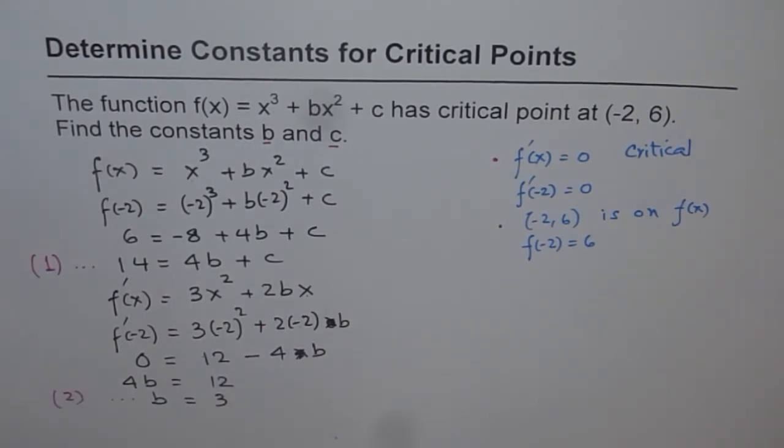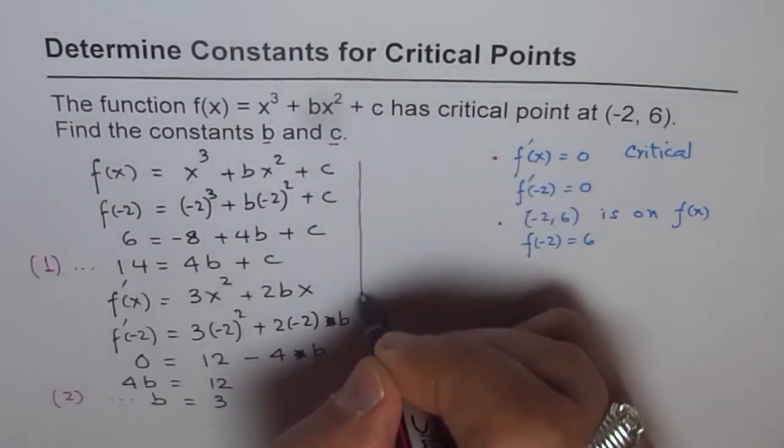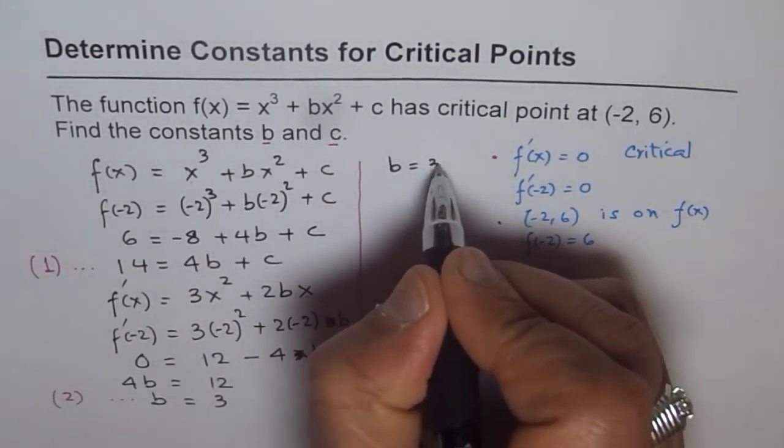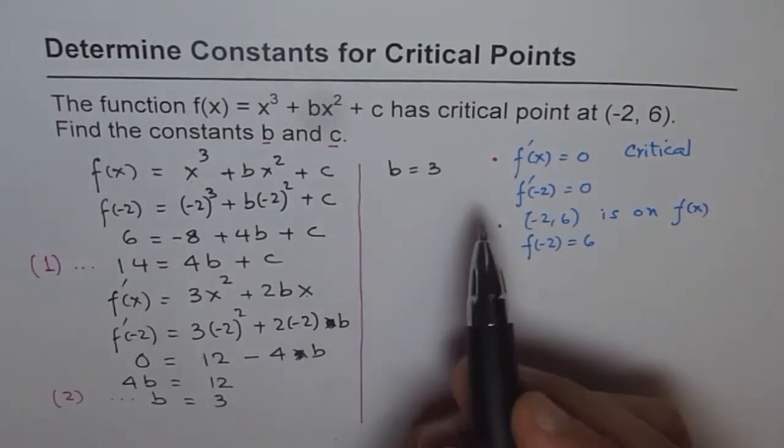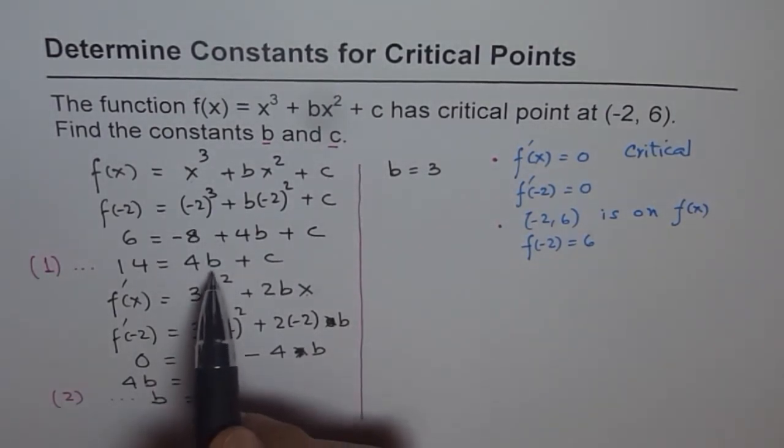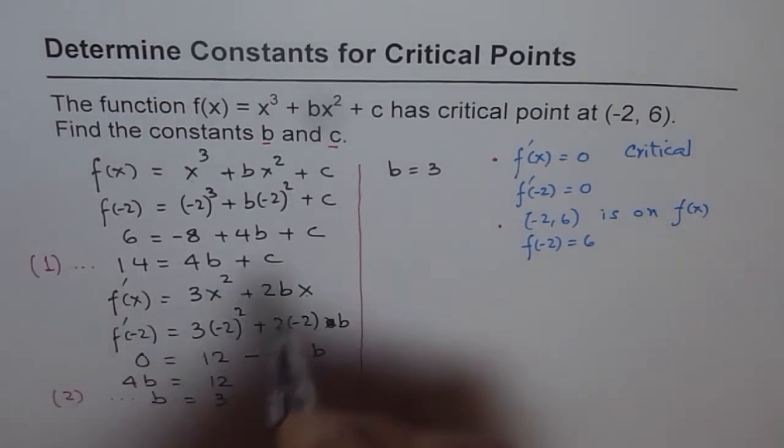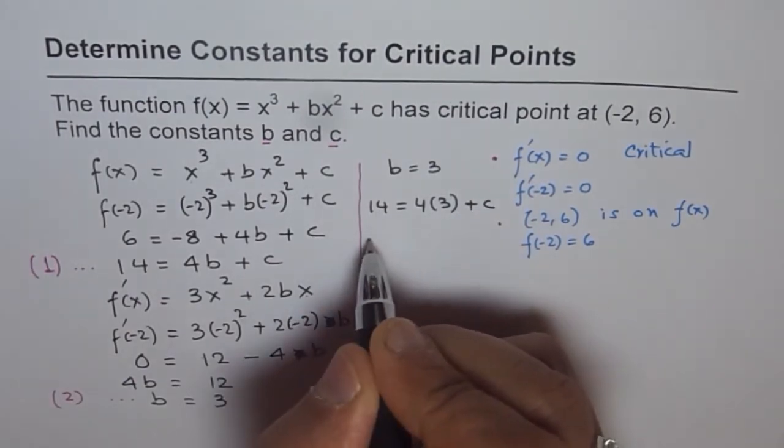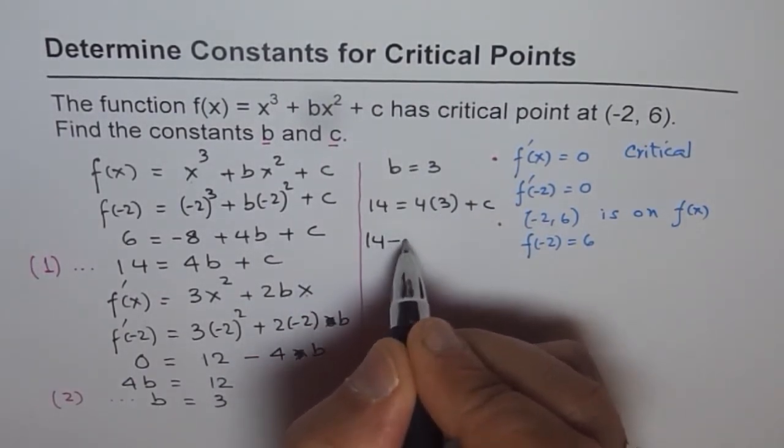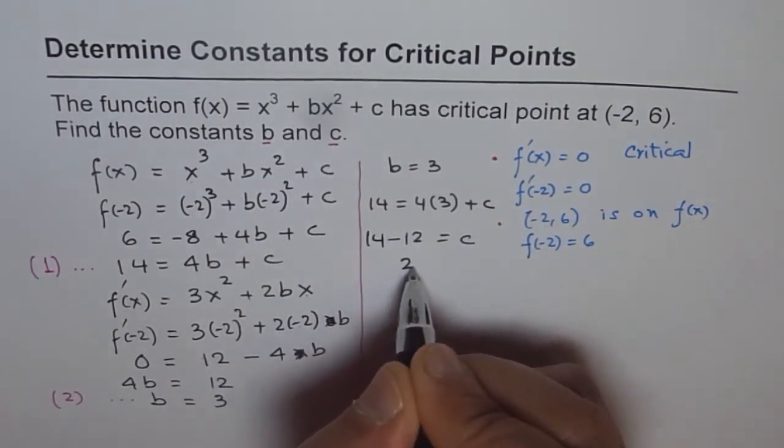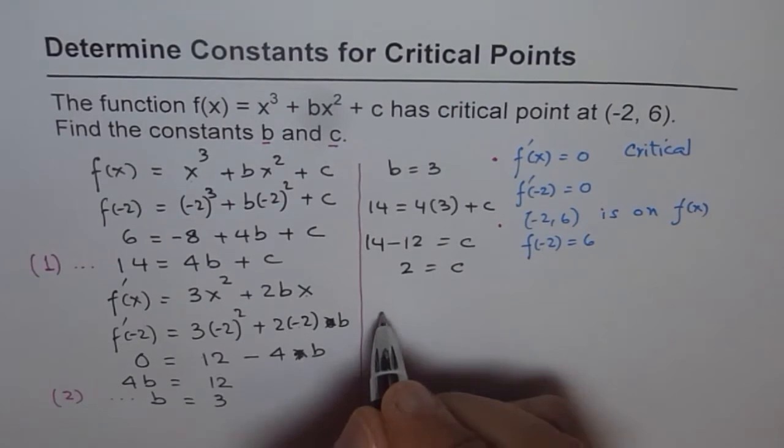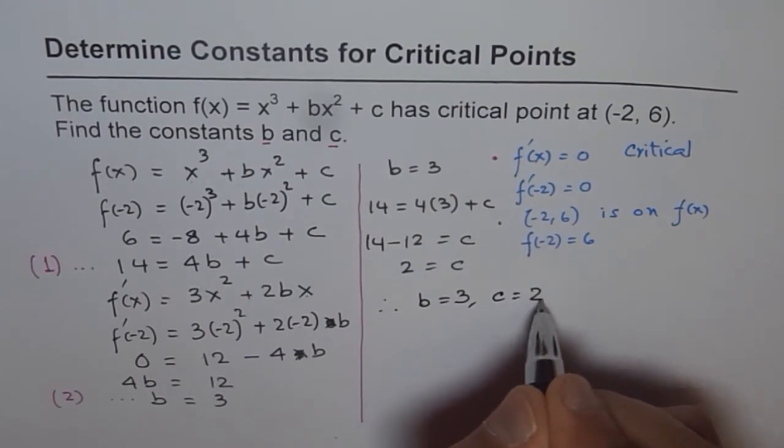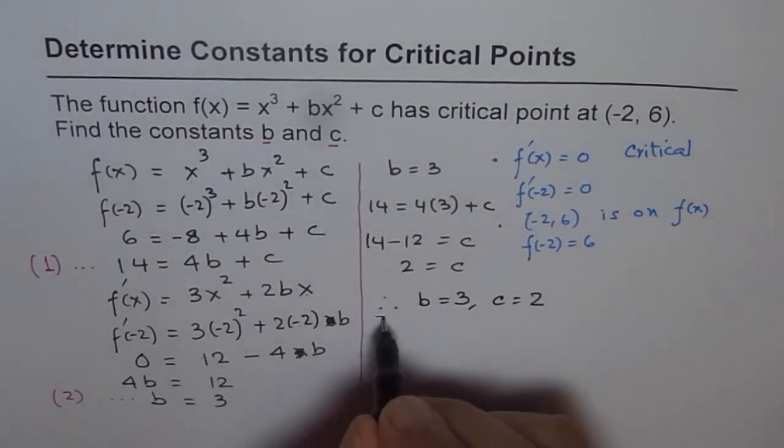So we have, let me now move on to the right side of the page. So what we found is that b equals to 3 from this particular condition. Now we can plug in 3 in our first equation to find the value of c. So it was 14. So 14 equals to 4 times 3 plus c. So 14, we'll take it on this side. 4 times 3 is 12 equals to c and that is 2. So c is equals to 2. And therefore, we get our values. That is b is equals to 3 and c is equals to 2.